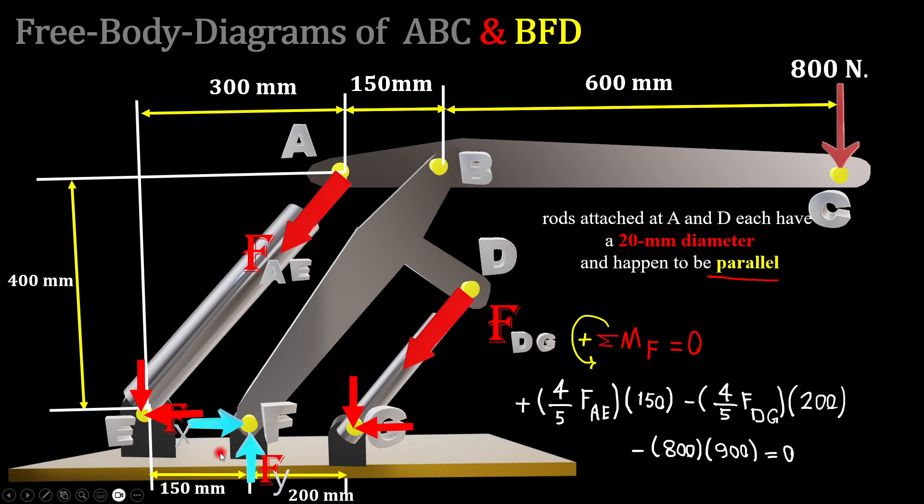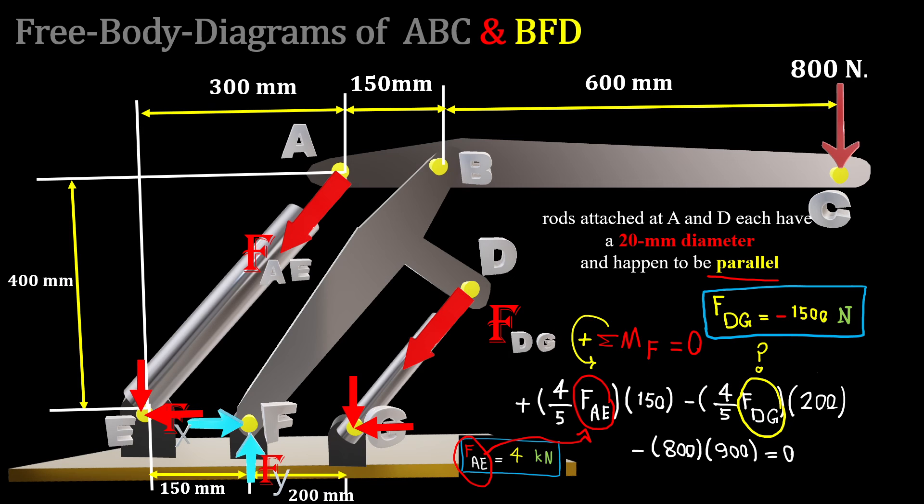From C to F is 900 millimeters. By replacing FAE in our equation which is 4000 or 4 kilonewtons, the only unknown of the problem is FDG and you can calculate it to be negative 1500 Newtons or negative 1.5 kilonewtons. The negative sign just says it's not compressive anymore, the sign is contradicting with the sign we have here, so it just says the force at DG is a tensile force.